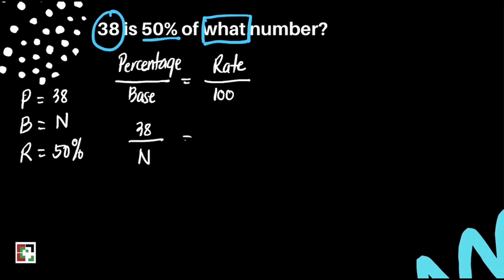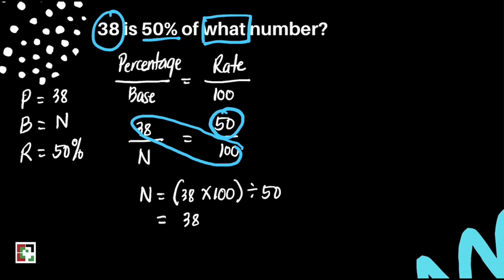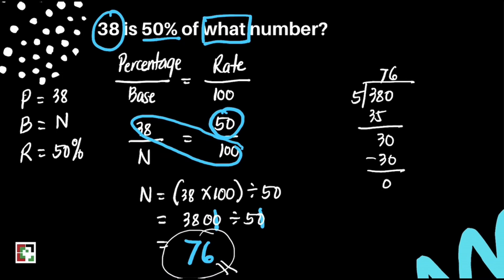Let's substitute. How to get the value of N is to do cross multiplication. That is 38 times 100 divided by 50. That's 3800 divided by 50. Just cancel two zeros. We have 380 divided by 5 and it will give us 76. 38 is 50% of 76. That's our final answer.